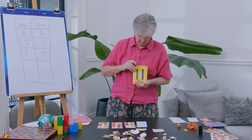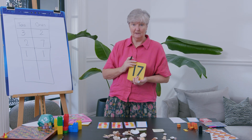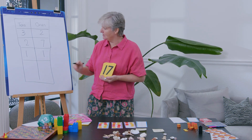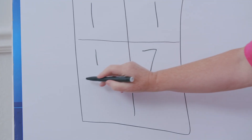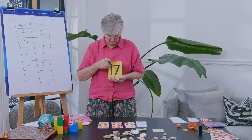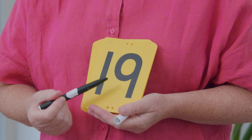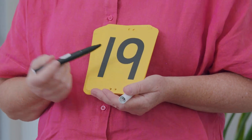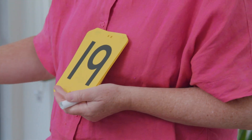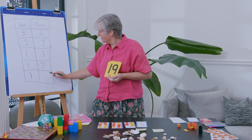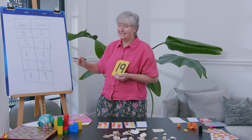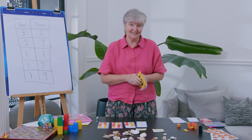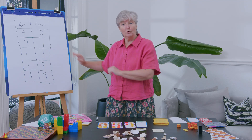Let's try another number. Did you say 17? Very good — 17 is one ten and seven ones. Let's try one more. The number 19: how many tens in 19? There's almost two, but not quite — only one. So there's one ten and nine ones. This is called a tens and ones chart. You might have done them with your teacher back at school. When we count collections, we can record them on a tens and ones chart.